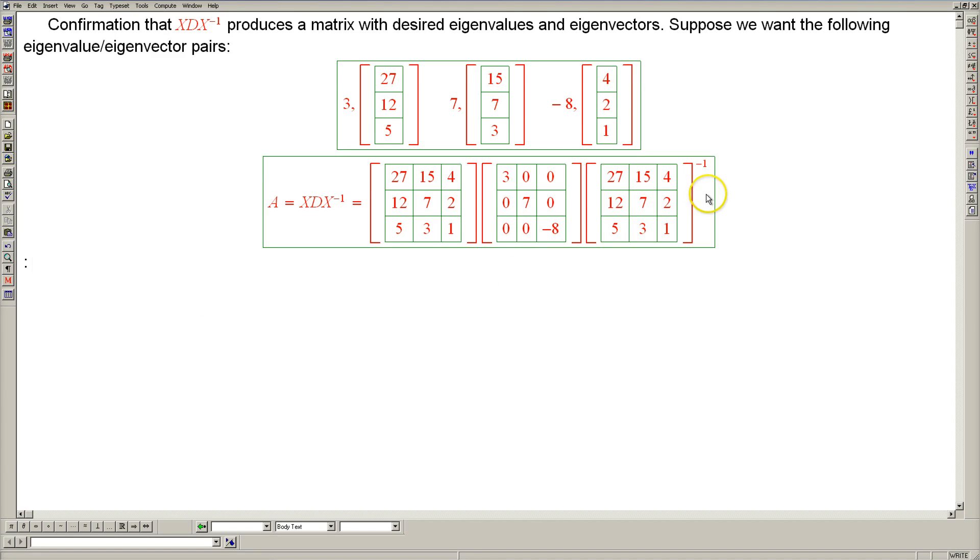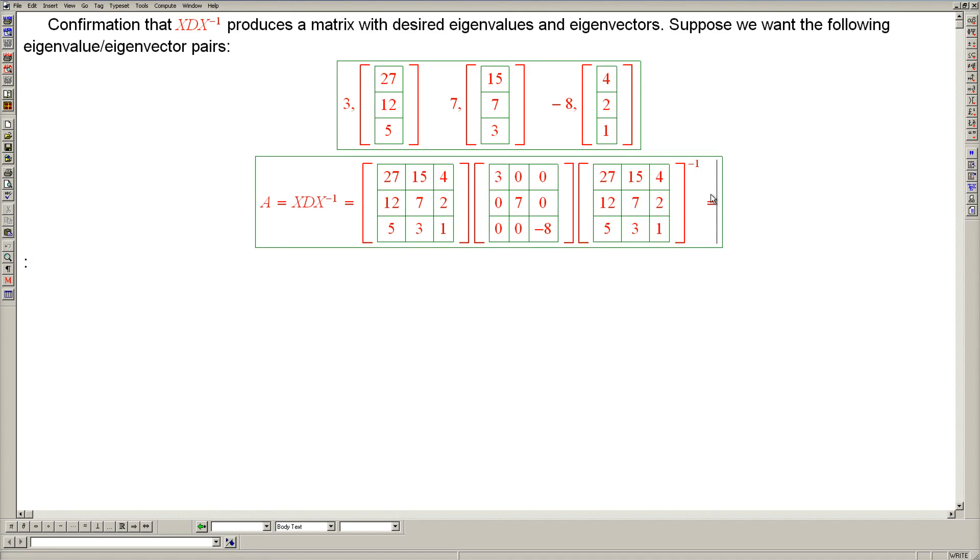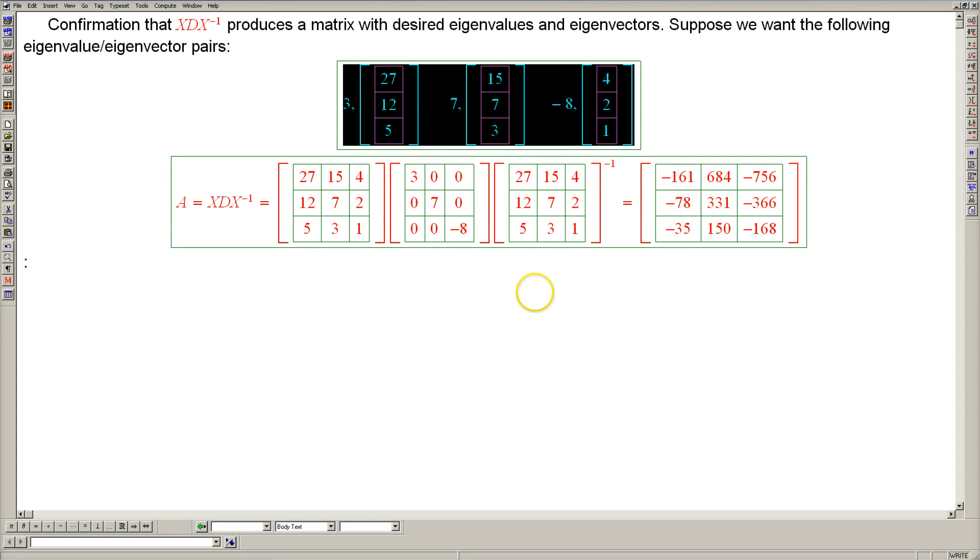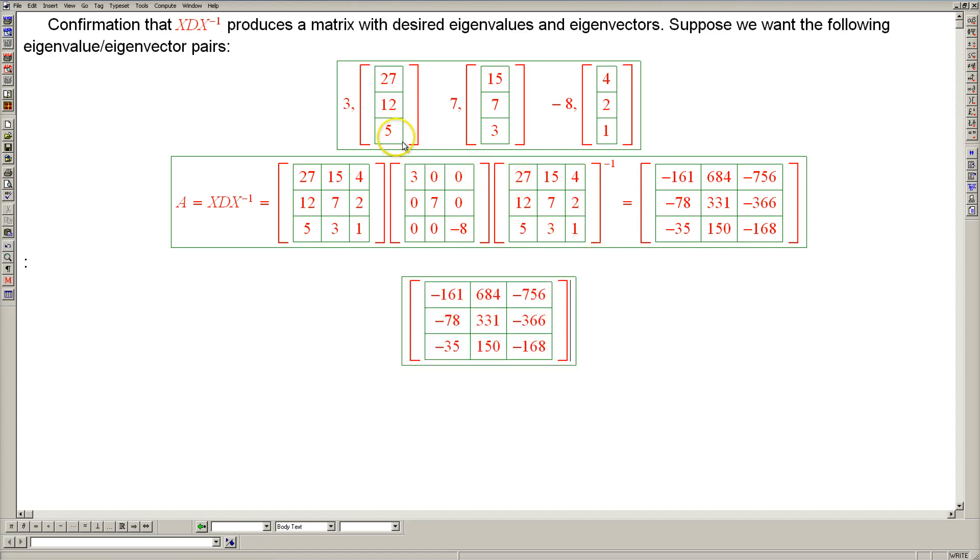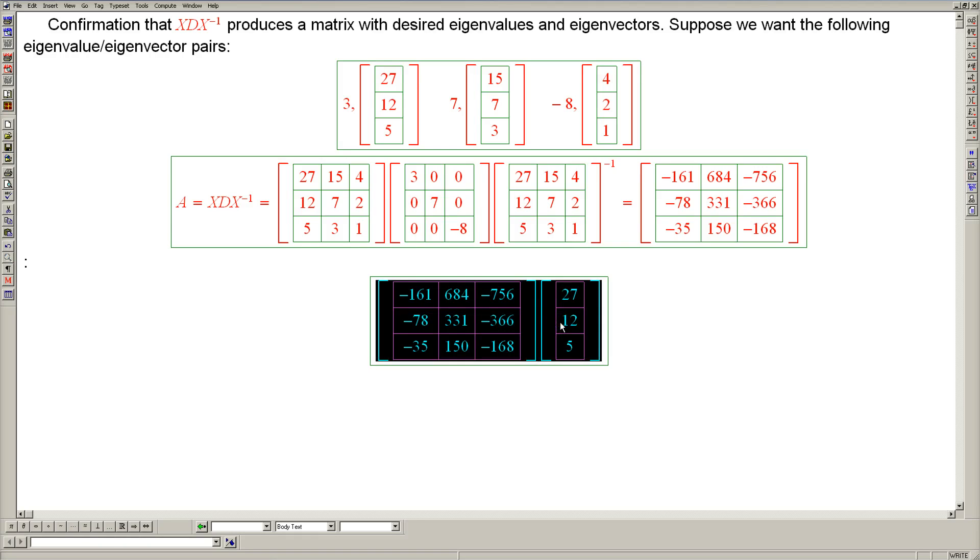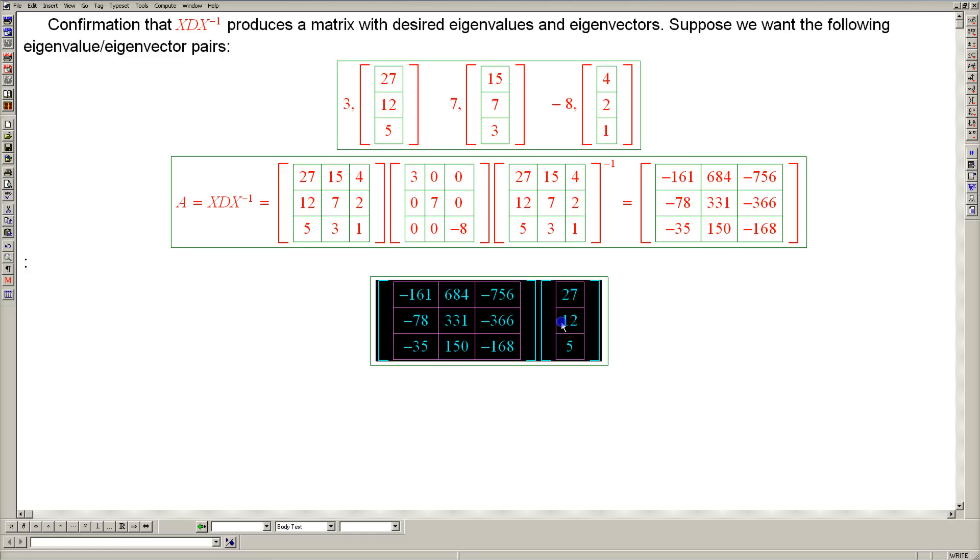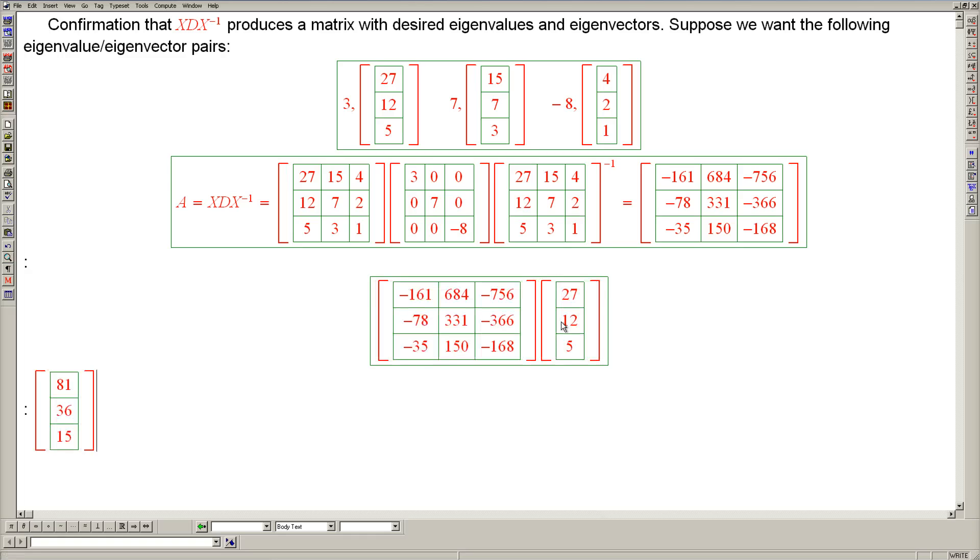So we now need to make sure that this matrix indeed has these eigenvalues and these corresponding eigenvectors. So the way to test it is to multiply this matrix by each one of these vectors, and make sure that we get the appropriate multiple back. So the result of this product should be three times this vector, because the corresponding eigenvalue should be three. And the result is correct.